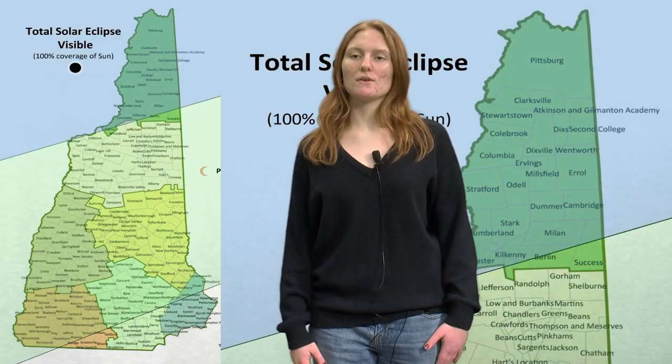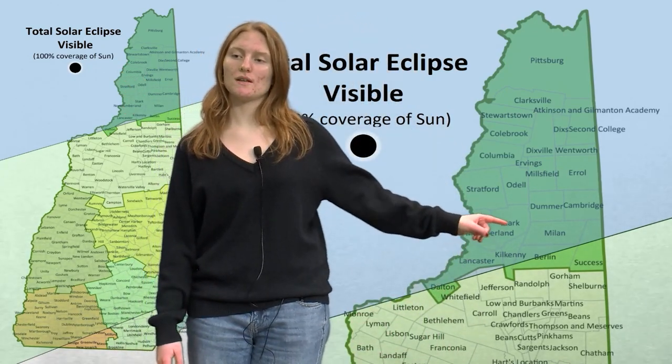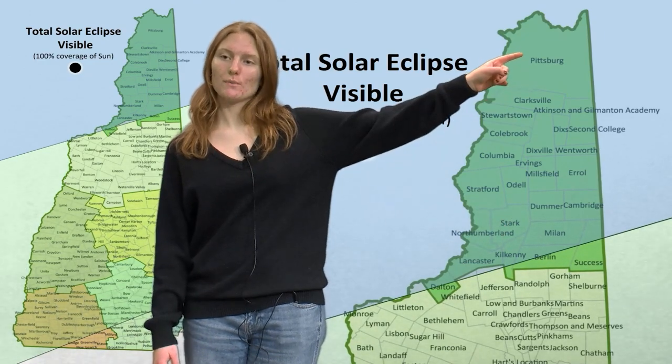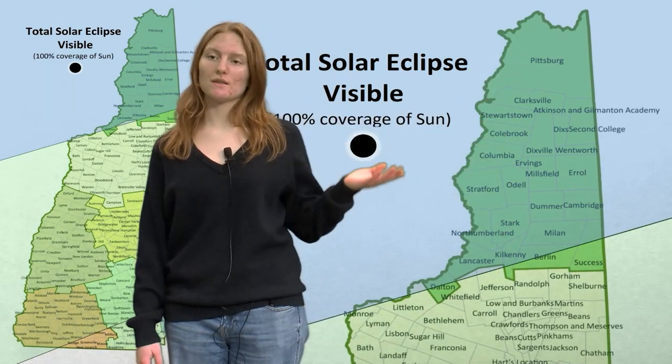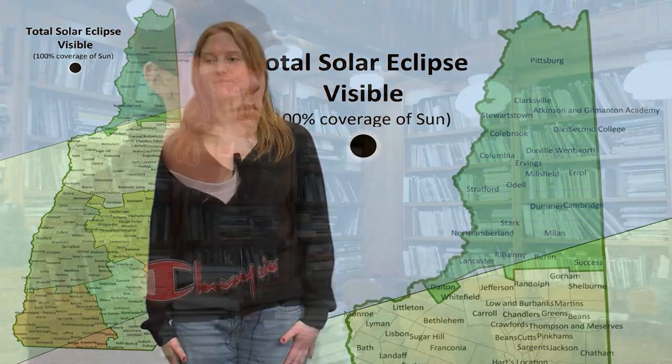To see totality you have to be mid to northern Coos County in New Hampshire. Where is that? It's way up north. You want to be north of the towns of Lancaster, Kilkenny, and Milan. The farther north you go, the better. You definitely want to be in the path of totality. 99% coverage just isn't good enough.